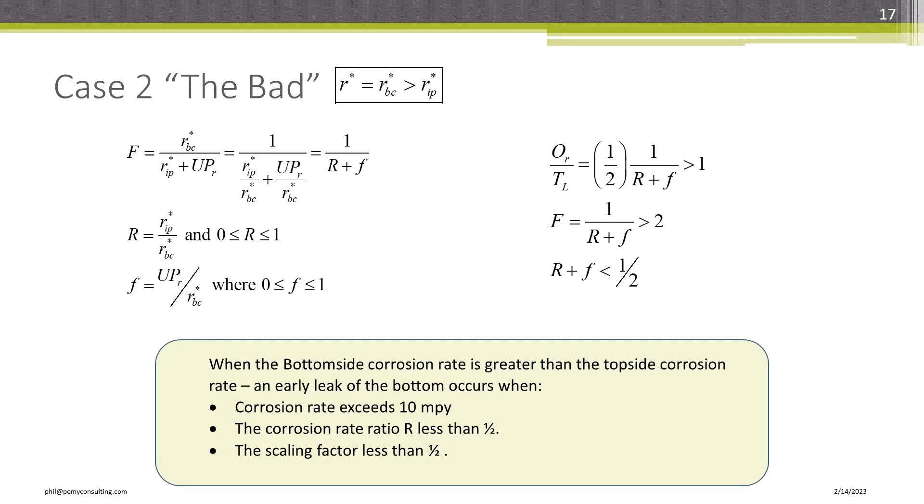Now here comes the bad. This is case 2, where the bottom side LCR is greater than the top side LCR. This gets a little bit abstract, and I will spare you the math, but I recommend you get the white paper and verify this for yourself. The bottom line is that when the corrosion rate exceeds 10 MPY, and the corrosion rate ratio, which is the ratio of the top side to bottom side LCR, is less than 1 half, or the factor F is less than 1 half, a failure occurs. More details about this later.